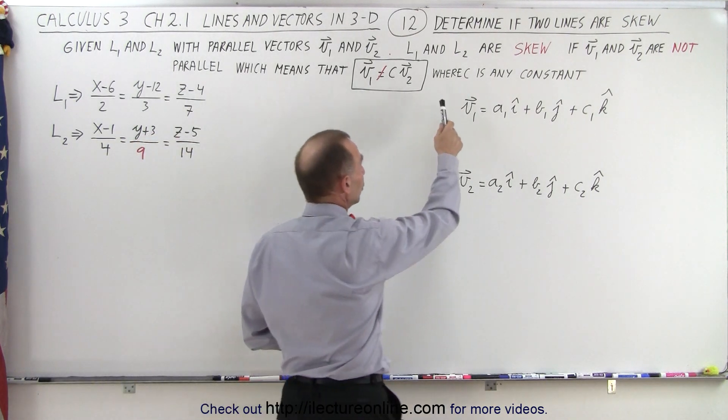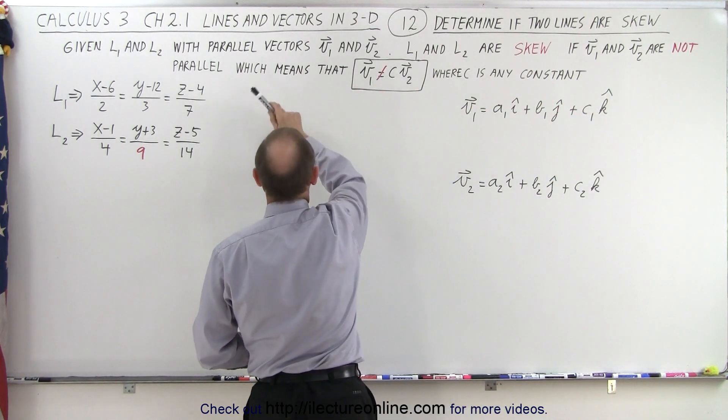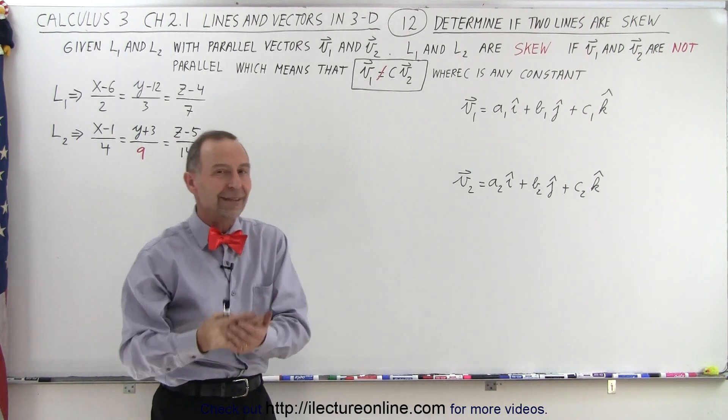So we can say that L1 and L2 are skew if V1 and V2 are not parallel, which means that V1 cannot be written as a constant times V2.